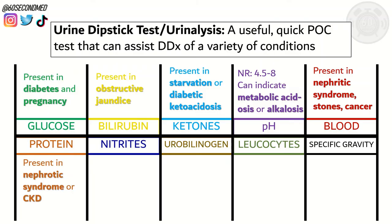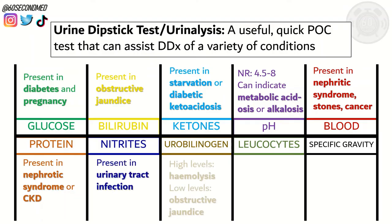The presence of protein can indicate nephrotic syndrome or CKD — chronic kidney disease. Nitrites in the urine are mainly associated with urinary tract infection. The presence of urobilinogen in the urine at high levels can indicate hemolysis, and at low levels is an indicator of obstructive jaundice.